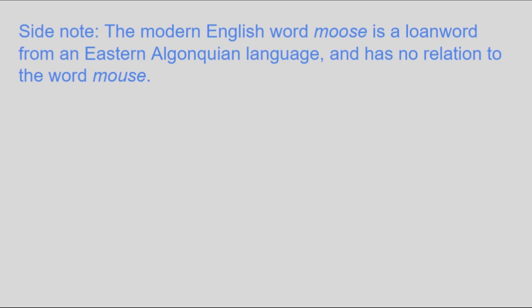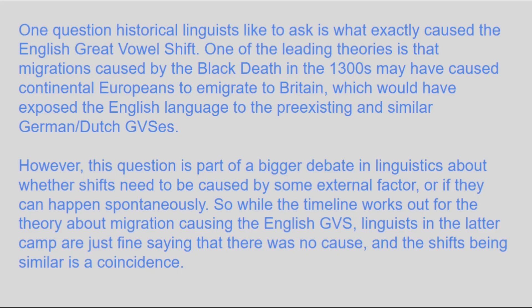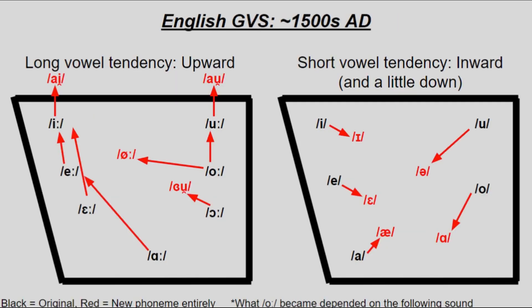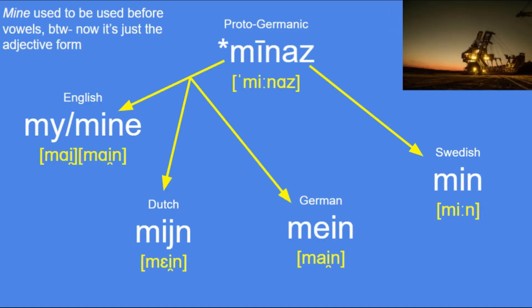Wondering how we got from *mūs to mouse? Time to explain the great vowel shifts — yes, there was more than one. German and Dutch had vowel shifts a few hundred years before English that may have actually caused the much more extensive English Great Vowel Shift. For German and Dutch, the high long vowels ū and ī became the diphthongs au and ai around the 1200s, although in Dutch both are more relaxed. When it came time for the English Great Vowel Shift around the 1500s, those same things happened, but also all the other long vowels moved up in the mouth while the short vowels generally became more lax. For example, Proto-Germanic *mīnaz became Swedish min, German mein, Dutch mijn, and English my — but also, in another sense, mine.